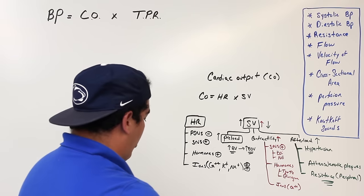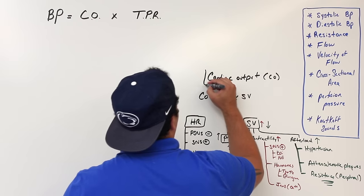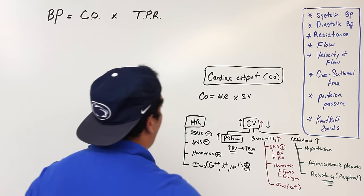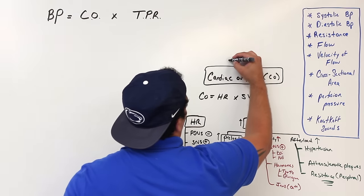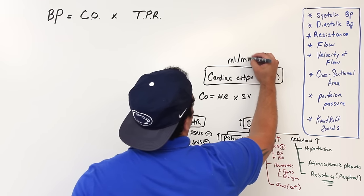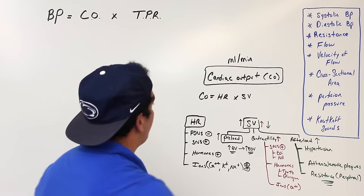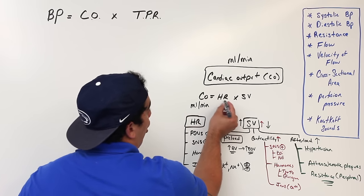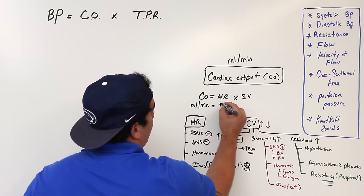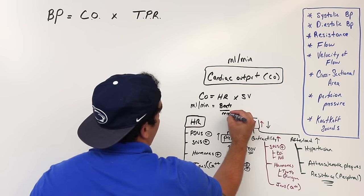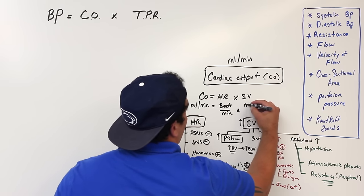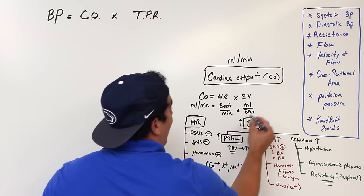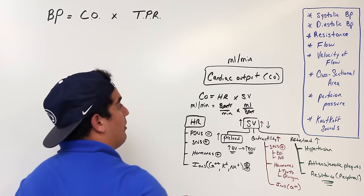How do we calculate cardiac output in terms of units? Cardiac output is in milliliters per minute. Heart rate is in beats per minute, and stroke volume is in milliliters per beat. The beats cancel out and you're left with milliliters per minute.